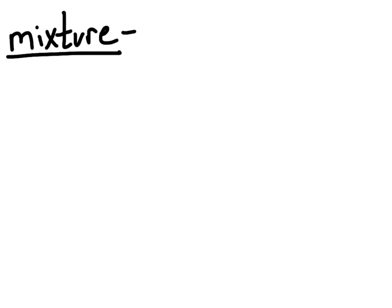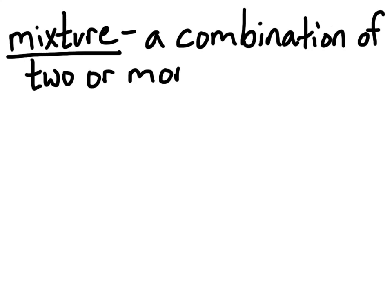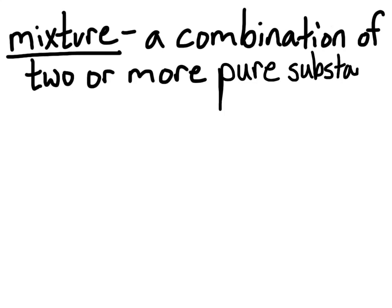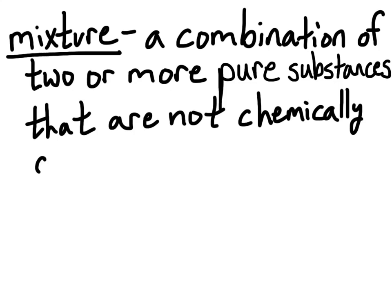So we'll look at a definition for mixtures. A mixture is a combination of substances — specifically a combination of two or more pure substances. And those pure substances, while they are combined together, do not actually combine chemically. So they are not chemically combined; they are just simply mixed together.